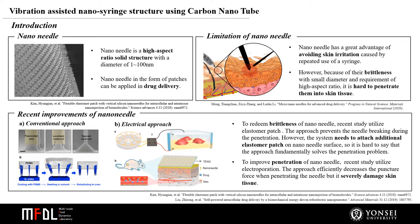Nanoneedle has a great advantage of avoiding skin irritation caused by repeated use of a syringe. However, nanoneedle has some problems. Because of their nanoscale length, nanoneedle requires high aspect ratio. However, it is hard to fabricate nanoneedle with high aspect ratio, and even when successful, because of their small diameter, they are brittle. Therefore, it is hard to penetrate nanoneedle into skin tissue.